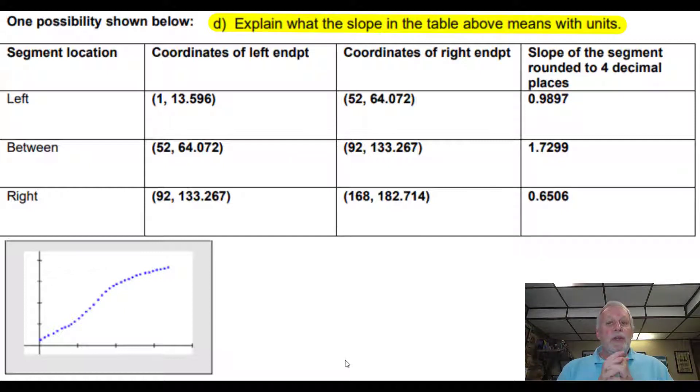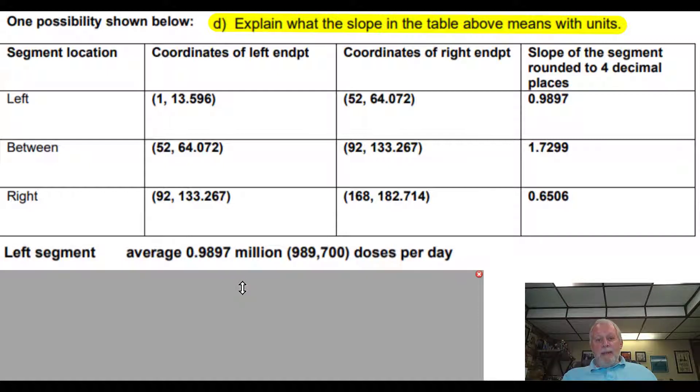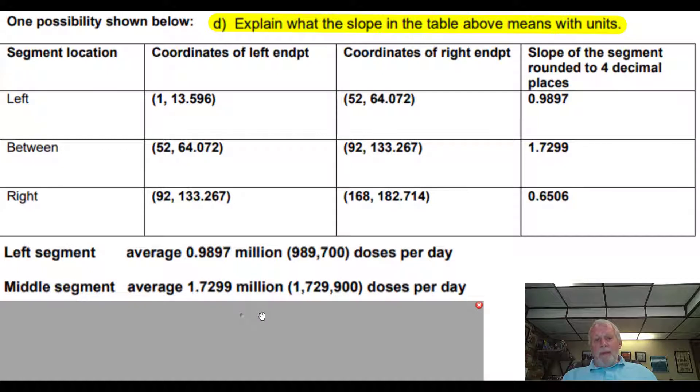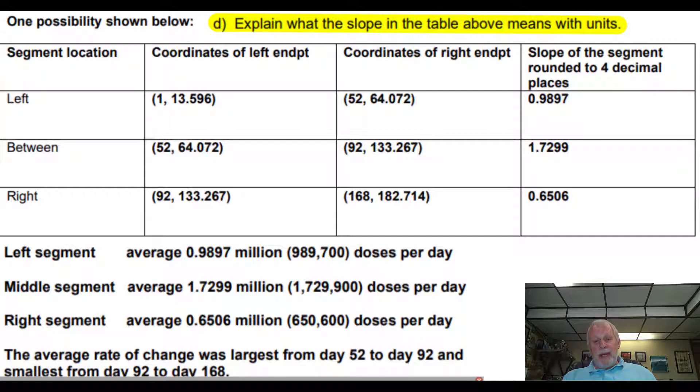So what I'm interested in is explaining what the slope means in the context of this problem, including units. So you might want to stop right now, pause, and think about what do these numbers actually mean and include units in your answers. So pause as needed. The left segment, this means that the average is 0.9897. Again, this is in millions doses per day, and writing as an actual number it's 990,700 doses per day on average. Middle segment says on average 1.7299 million people were getting their first dose per day. And the right segment is this number here. You can see it started a little bit slowly, really took off in the middle. And then now a lot of people have gotten it and not as many people are seeming to want to get it. So the average rate of change was largest here and smallest here.